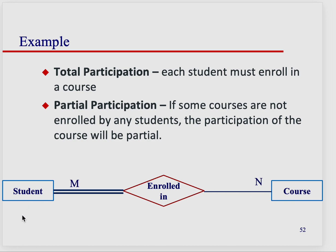But if you say that every single student must enroll, then you have the double line. So it shows you if it's total participation and you don't want the case of zero, then you would put two lines. So here in this case, you have each student must enroll in a course. Just like if there was only one line, you would say a student can enroll in zero to many courses — but now you say no, a student has to be enrolled in at least one course.